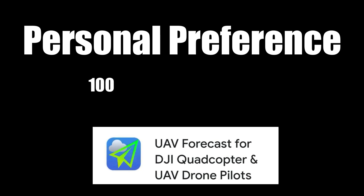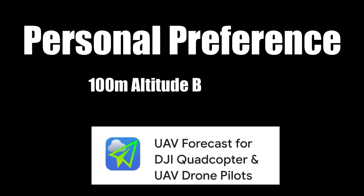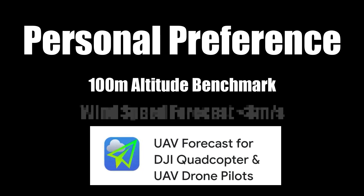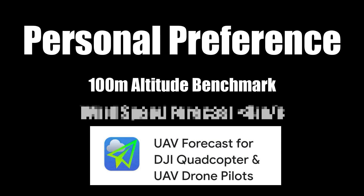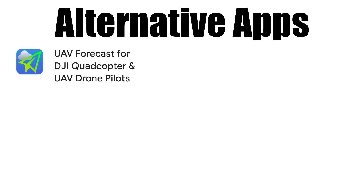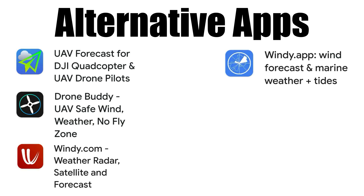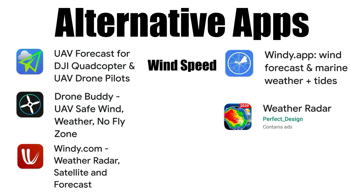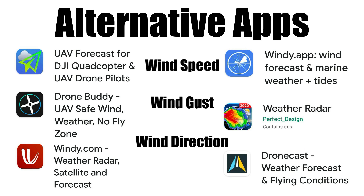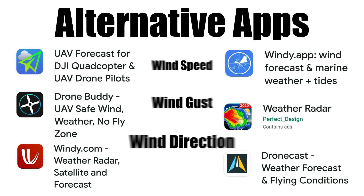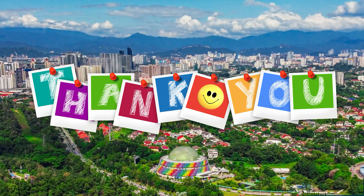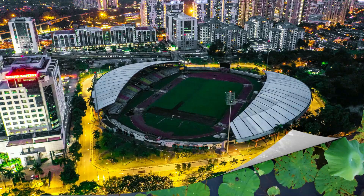Just my personal preference — I normally use 100 meters as an altitude benchmark to check wind forecast, and only fly if the wind speed is below 8 meters per second. Alternatively, you can download the UFV Forecast app or any other weather app to pre-check wind speed, gusts, and direction before your flight. Thanks for watching and see you again on my next video.